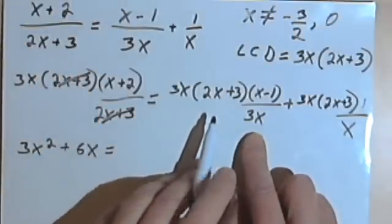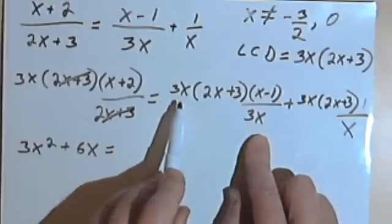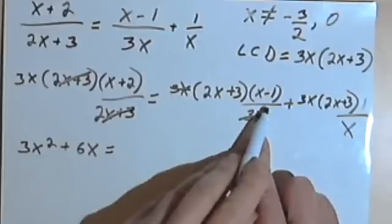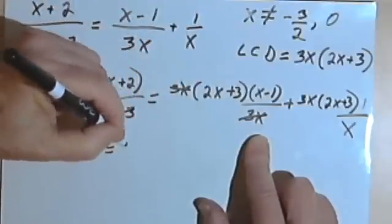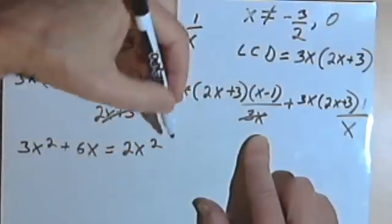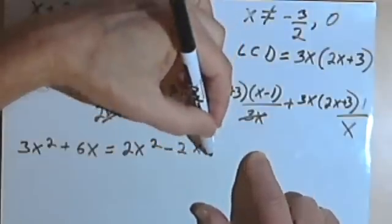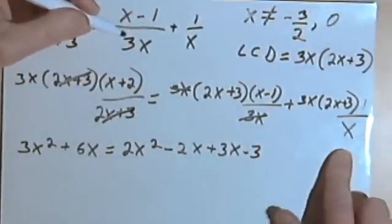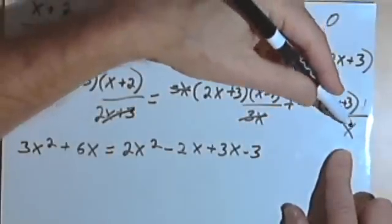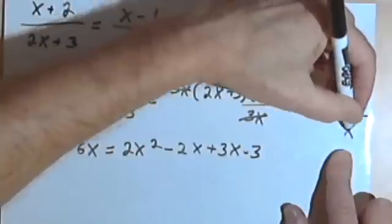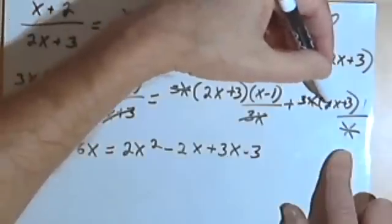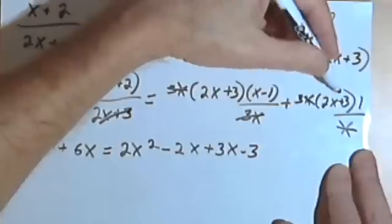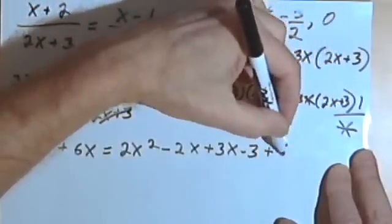On the right side, the first fraction has a denominator of 3x being multiplied by 3x, so those cancel. That leaves 2x plus 3 times x minus 1, which I FOIL: 2x times x is 2x squared, 2x times negative 1 is negative 2x, 3 times x is positive 3x, and 3 times negative 1 is negative 3. For the last term, I distribute 3 times 2x plus 3, giving me 6x plus 9.